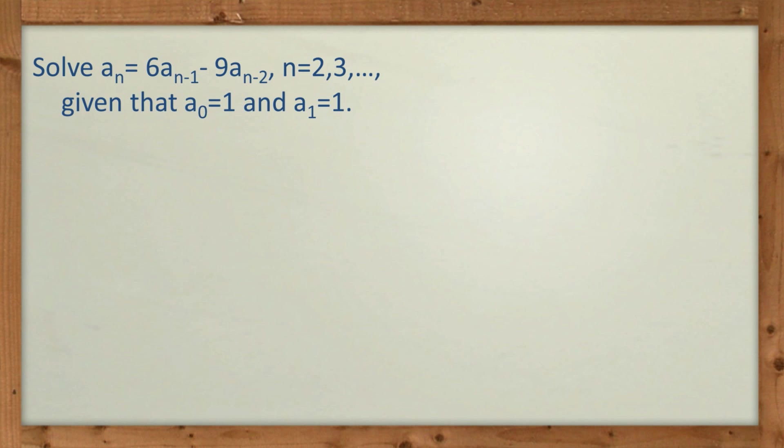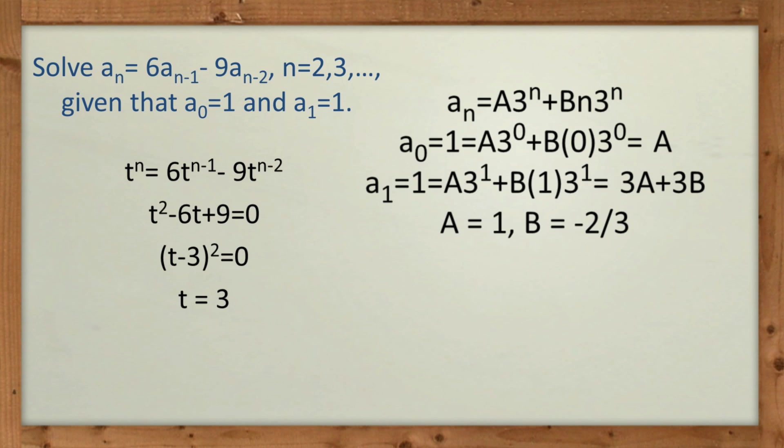Okay, now that we've spent a little bit of time understanding the standard problem, we can go through this one pretty quickly. This is a little bit different because when we work out the quadratic equation, we see that it's only got one root, in this case t equals 3. So what do we do in that case? Well, you can see up here I've written that a_n equals a*3^n, which is what we did from before, but where do we get a second term from?